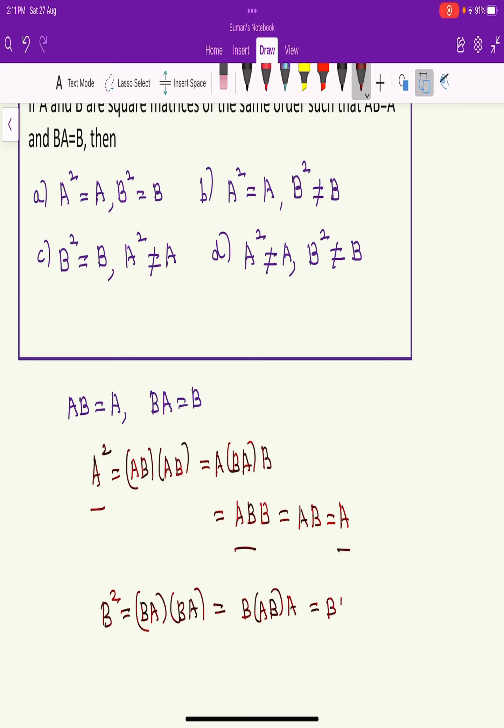But AB is A, so it is B times A into A. B times A is B, so this is B into A, which is again B.